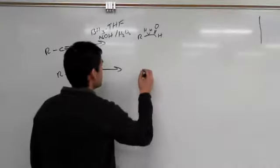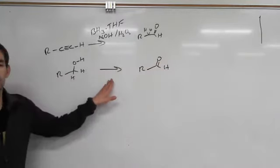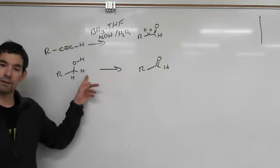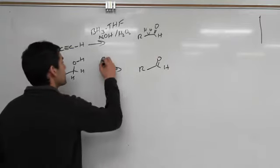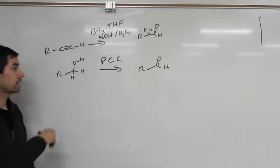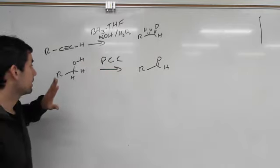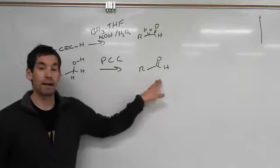How else can we make our aldehydes? We can take primary alcohols and treat them with a reagent to give us that aldehyde. The reagent that will take a primary alcohol to an aldehyde is PCC. We can take PCC and treat the primary alcohol to make our aldehyde. These are the most common methods we've talked about in class for making aldehydes.